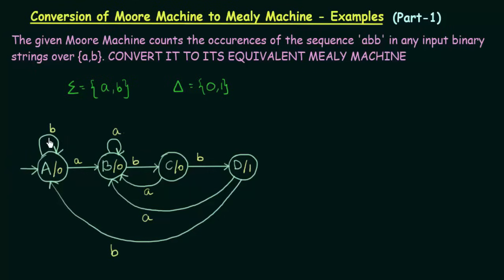We have a transition B going to state A. What is the output associated to state A? It is 0. So this B will be associated to 0. Then come to transition A — this input A is going to state B, and the output associated to state B is also 0. So this A will also have a 0. And this other A is also going to state B, which has output 0, so this A will also give a 0.